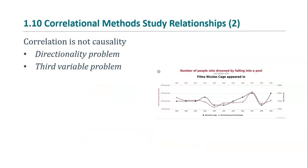Correlational studies are sometimes necessary when one cannot conduct an experiment, but they suffer from a couple of problems. We don't know if, when two variables are correlated, the first caused the second or the second caused the first. We also don't know whether some third variable may have caused both results, or whether the correlation doesn't reflect any relationship at all and is simply due to chance. As seen in the figure, there is a nice correlation between the number of people who drowned by falling into a pool each year and the number of films Nicolas Cage appeared in that year — it would strain credulity to suggest that Nicolas Cage films caused people to drown themselves.